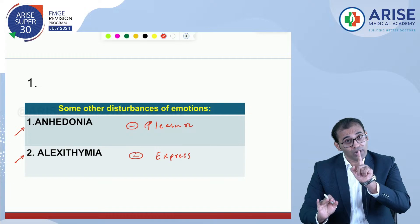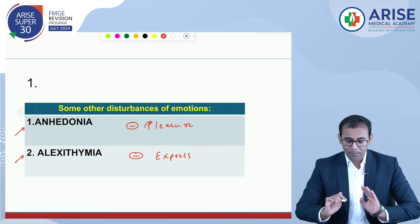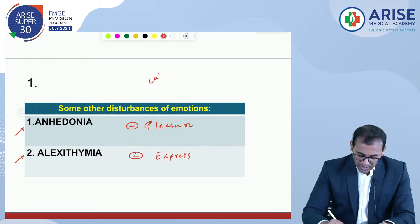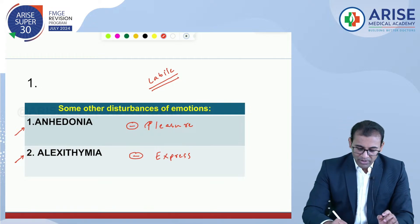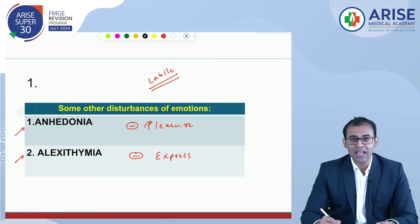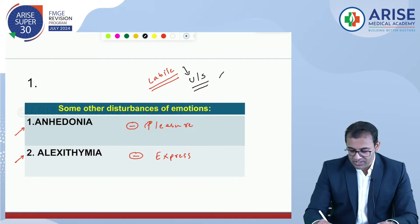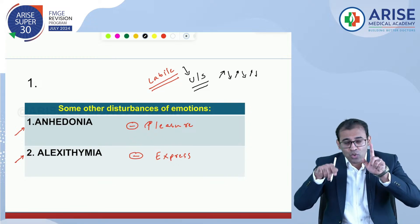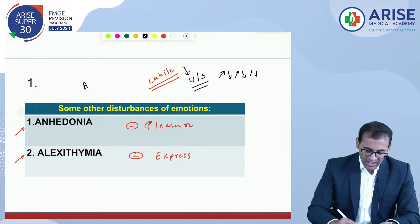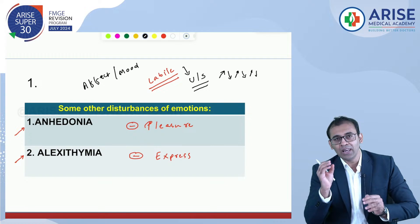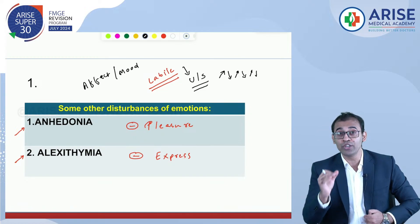Emotional lability means unstable emotion. For example, a female who is laughing, then shouting, then laughing again — this fluctuation of emotion is called emotional lability, also known as labile affect. Affect and mood both refer to emotion.